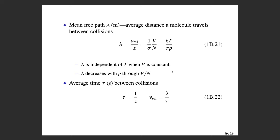The average time between collisions is simply one over the collision frequency, τ = 1/z. The mean free path, average speed, and average time between collisions are all related by λ = ⟨v⟩·τ, which looks just like the definition of speed: distance equals speed times time.